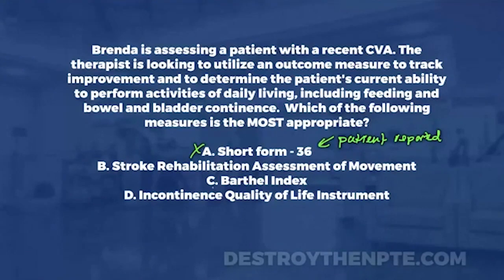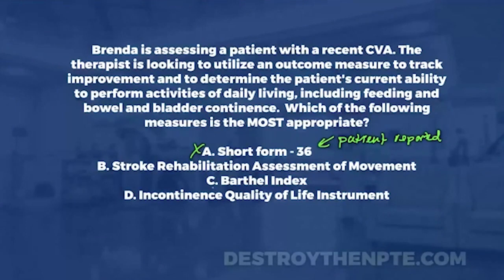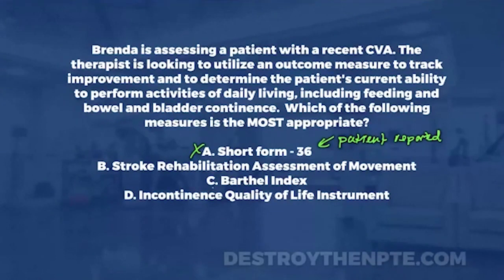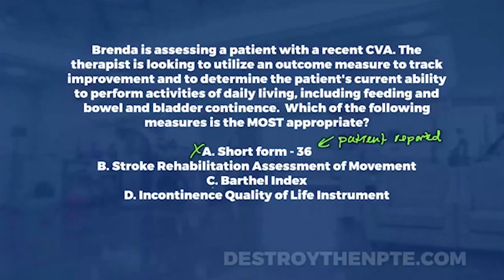Option B is the Stroke Rehabilitation Assessment of Movement, also known as the STREAM. It's performance-based and functional-based, and it's used for a patient with a stroke. However, it's used to assess coordination, functional mobility, and range of motion primarily — for both upper and lower extremities. Notice it doesn't target ADLs like feeding or bowel and bladder continence. Most specifically, it does not target incontinence. So B is out because it does not address the question.